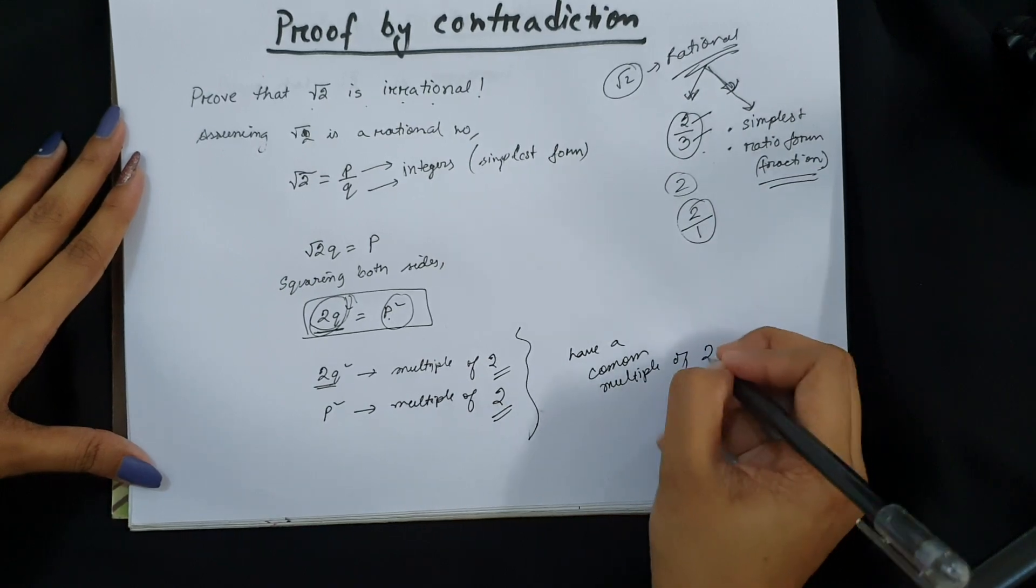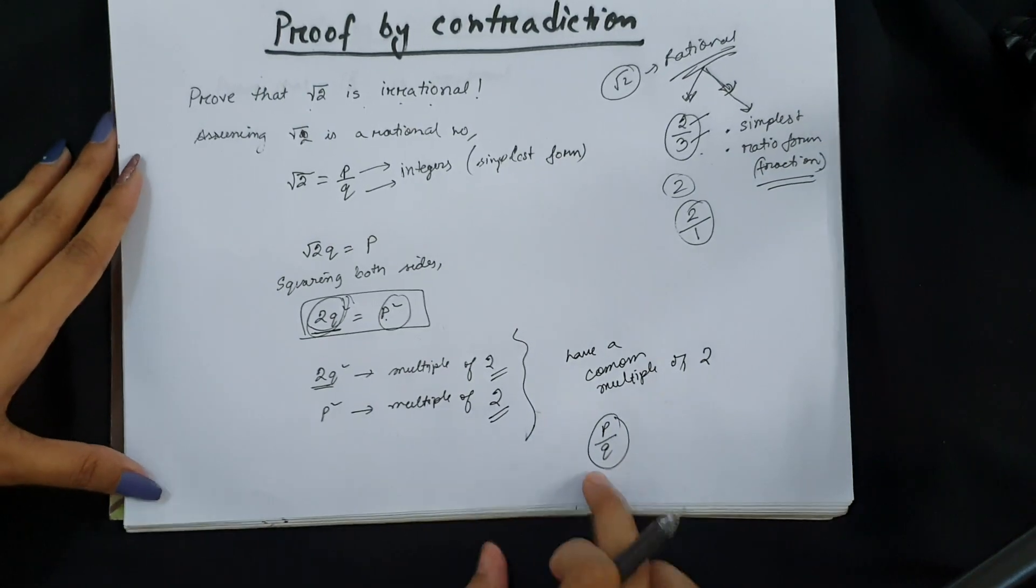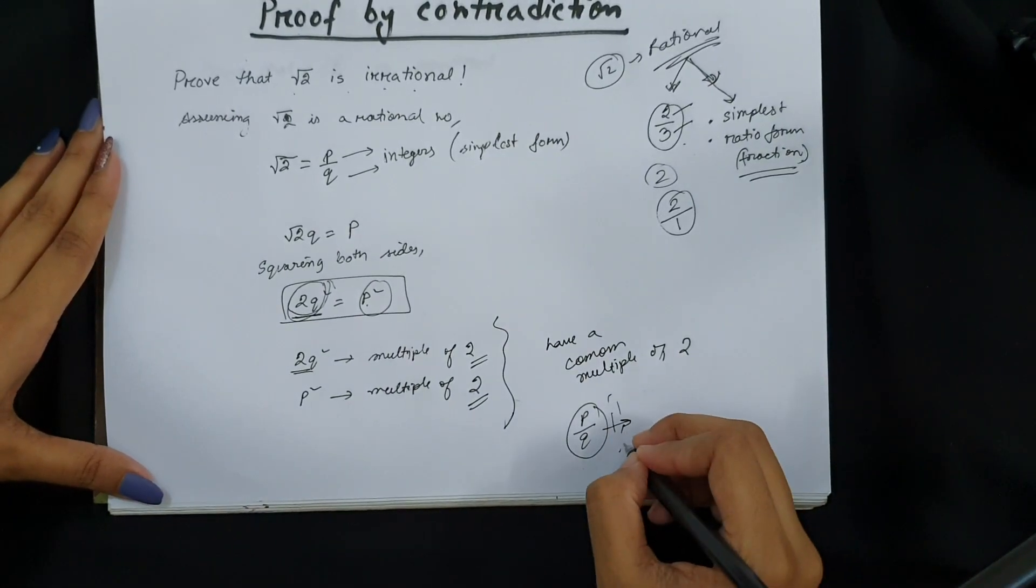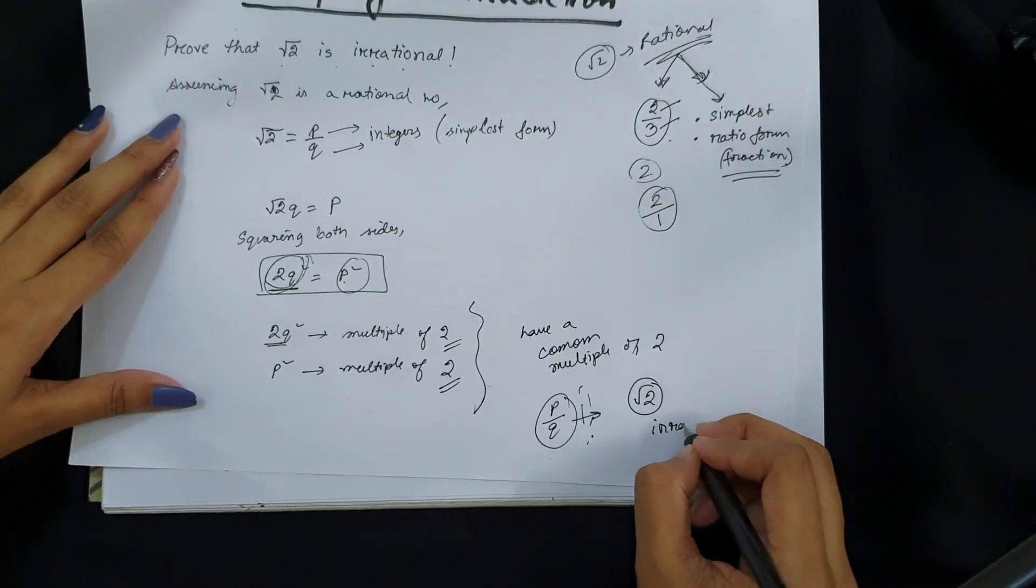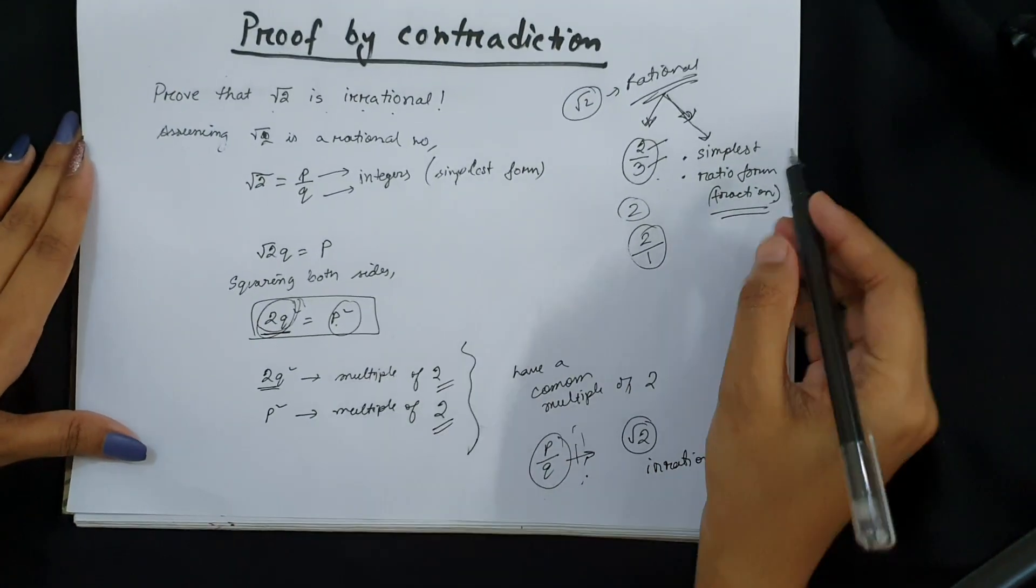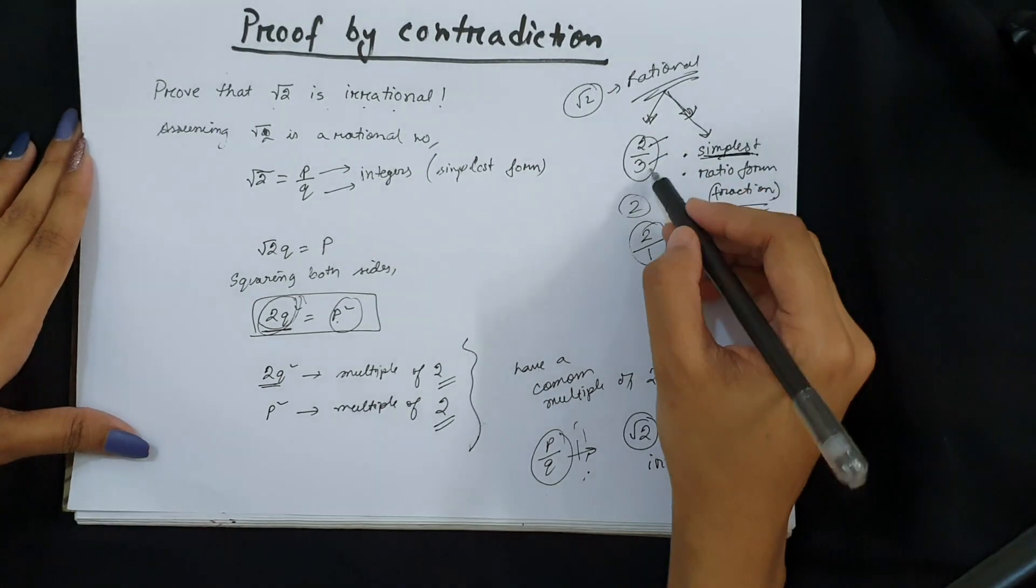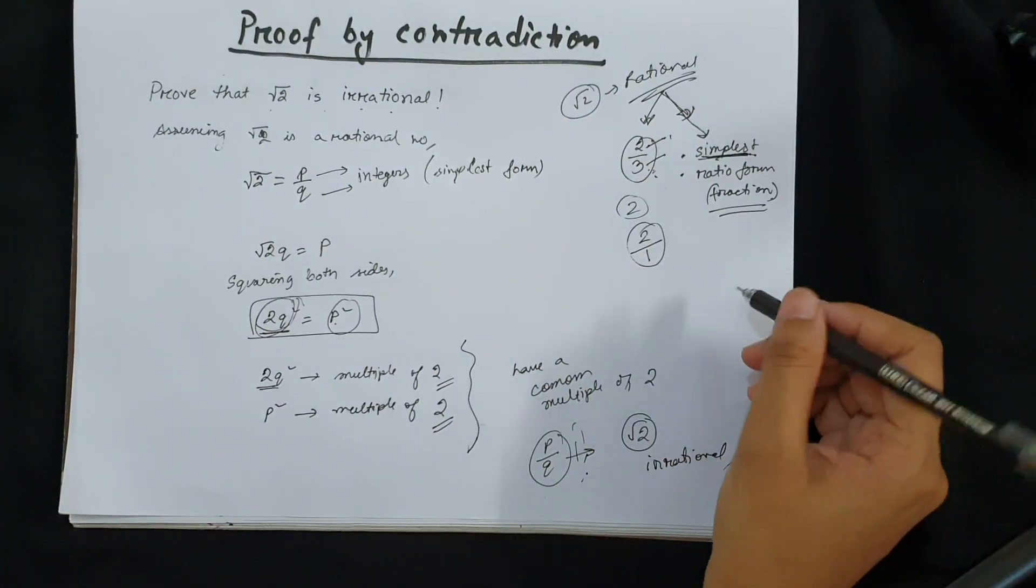So √2 is also irrational, because it contradicts with the initial assumption that they were in their simplest form. Because if it's in its simplest form there cannot be a multiple. For example, if you take any value 6/9, it is not in their simplest form because they share a common multiple here.